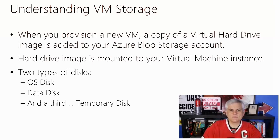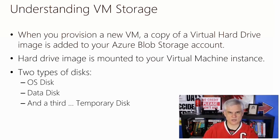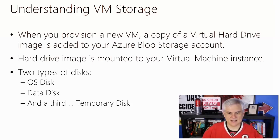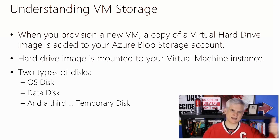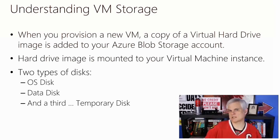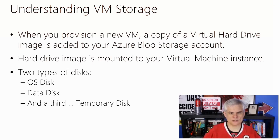These disks are mounted as drives on a virtual machine. In the Windows operating system, the operating system disk is mounted as the C drive. In Linux, it's mounted as the /dev/sda1 partition used as the root directory. The D drive is the temporary disk that you would use for temporary purposes — the operating system uses it to cache things, but you might also use it for cached information you don't expect to be there on a permanent basis. For a more long-term solution, you would attach one or more data disks.